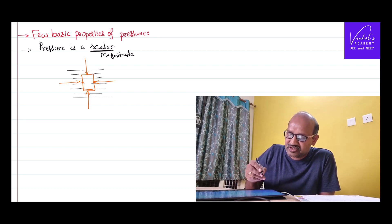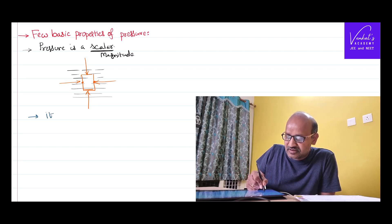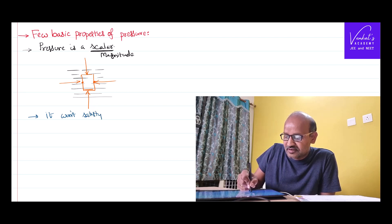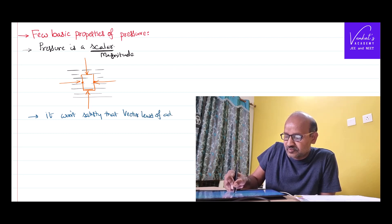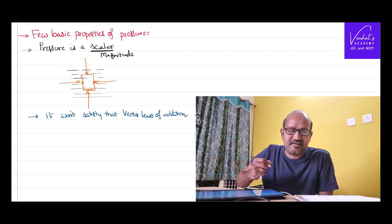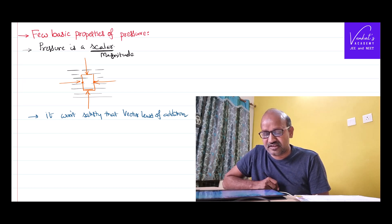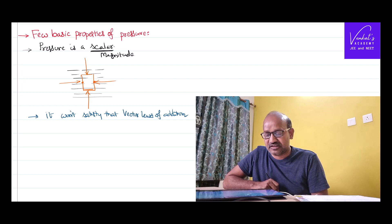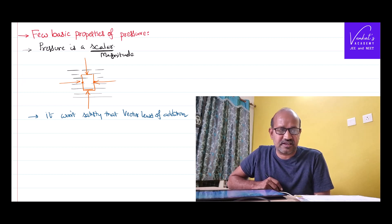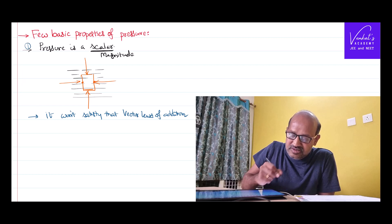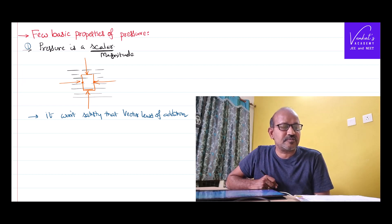We cannot assign a specific direction. Moreover, whenever you want to call a physical quantity a vector, it shall satisfy the vector laws of addition — and pressure won't satisfy those vector laws of addition. So there is no point in calling pressure a vector. It shall be treated as a scalar because it has so many directions and no specific direction. A vector is supposed to have a specific direction — that's the first point.